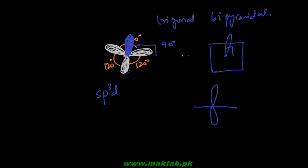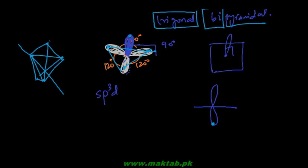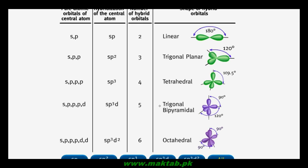The name trigonal bipyramidal comes from the fact that the three lobes in the plane form a triangle, and joining the top lobe to those three points gives one pyramid. Joining the bottom lobe gives a second pyramid — so there are two pyramids, hence bipyramidal. Similarly, if there is a single s, three p's, and two d orbitals — sp3d2 — there are six total orbitals and the structure is octahedral.